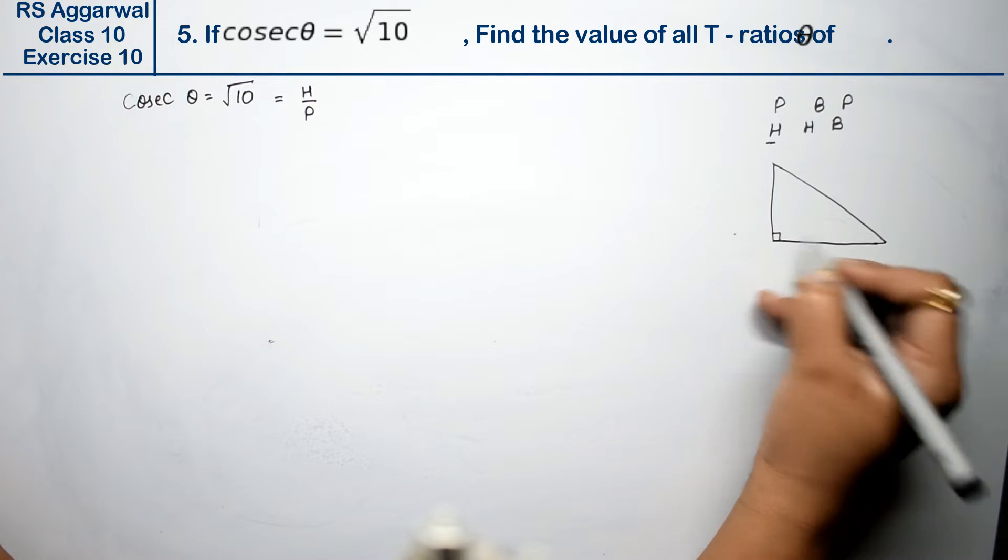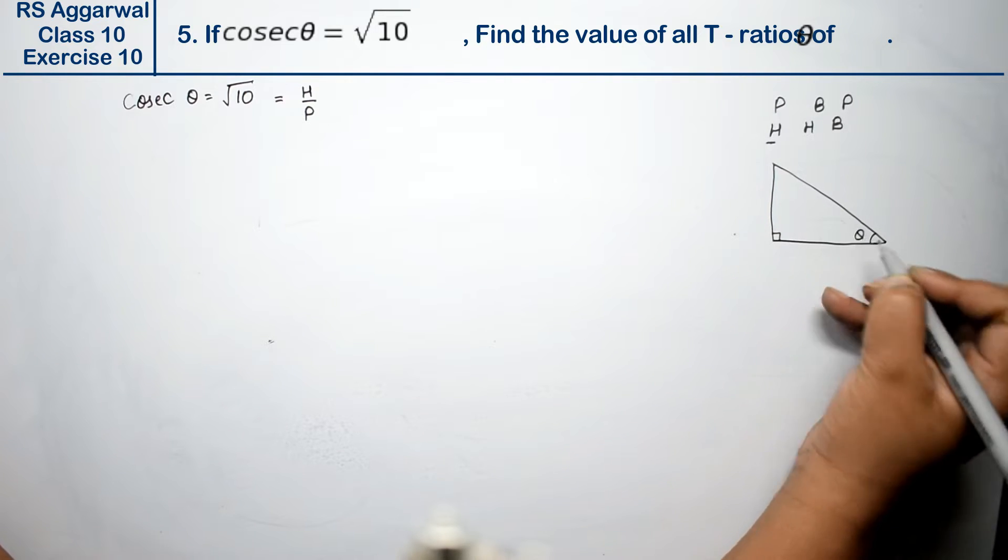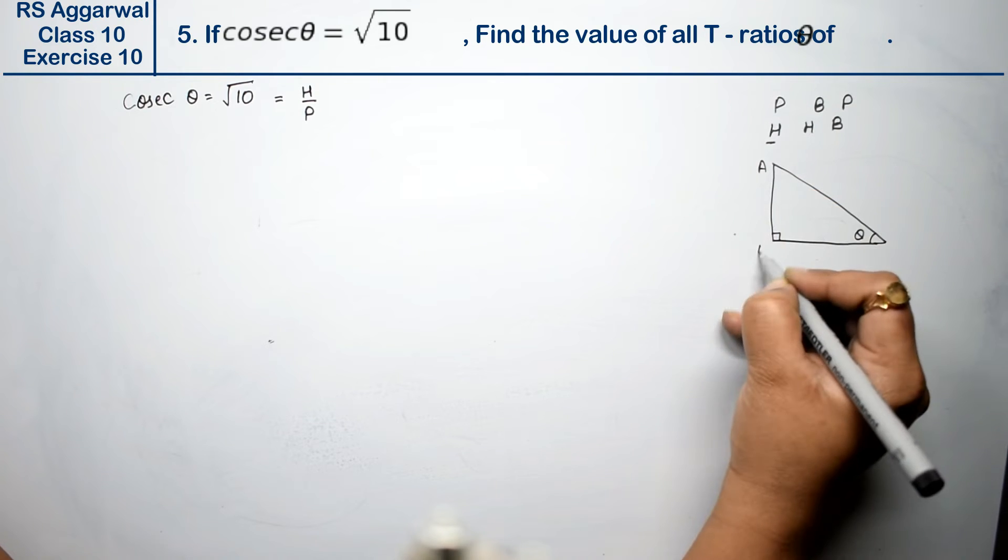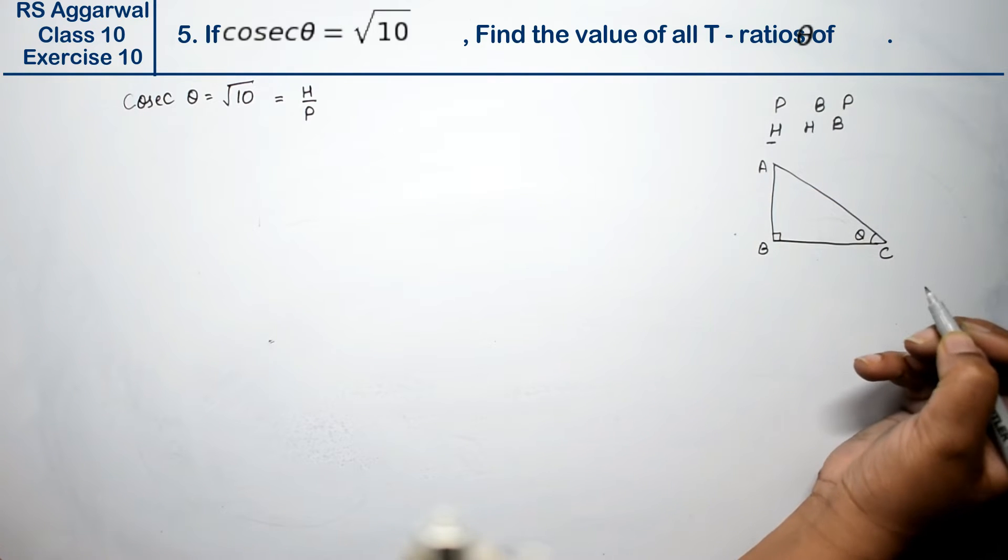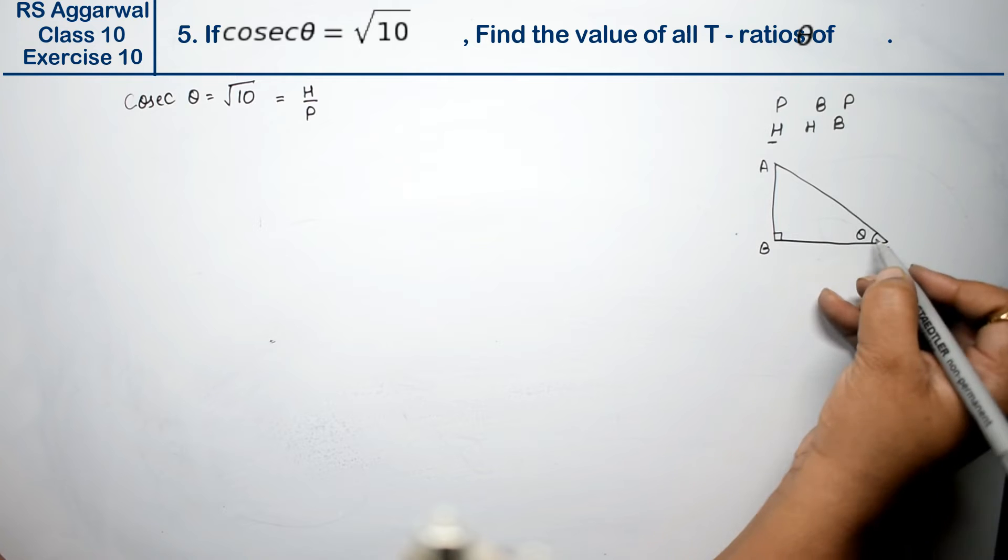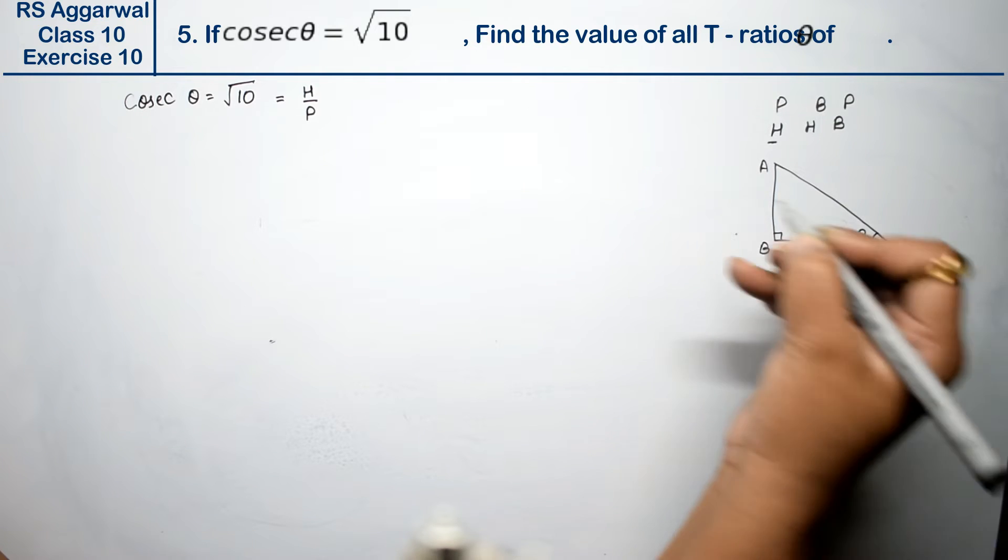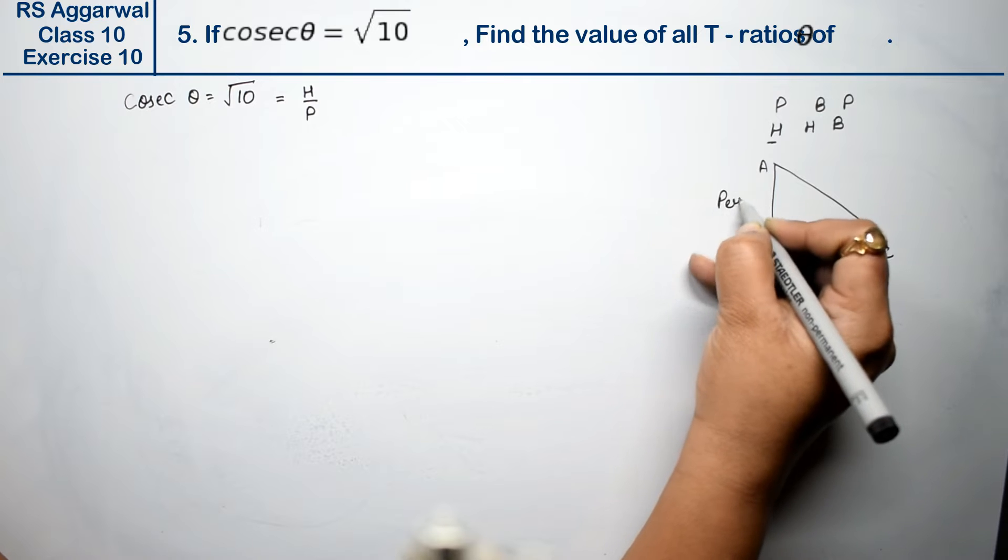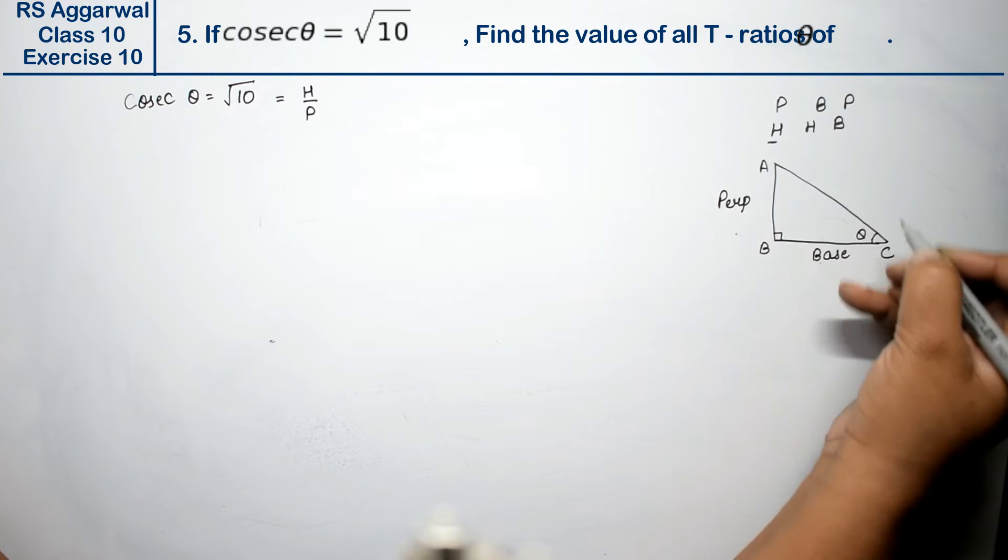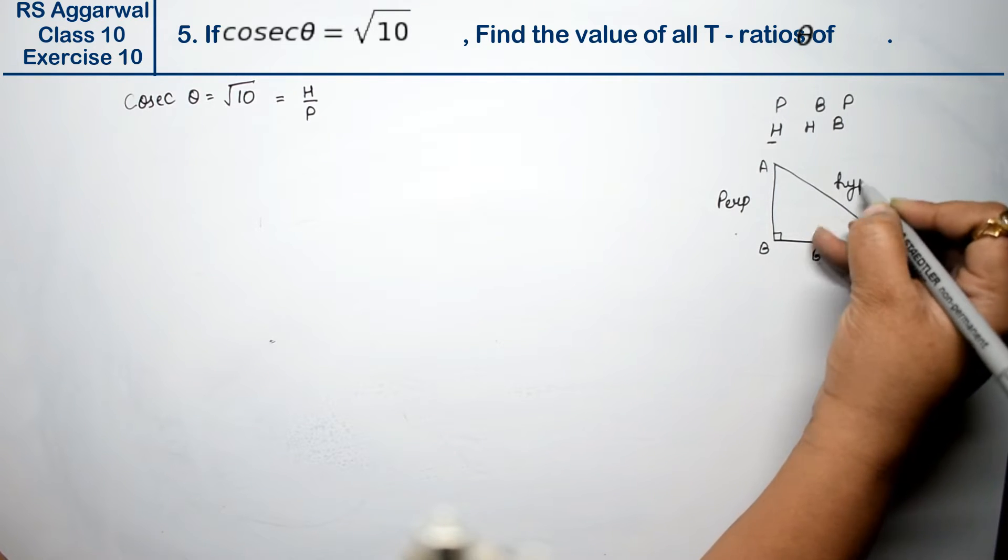This is a 90 degree angle and this is theta. We have the triangle ABC. Now what happened? Where is theta? It was base. The opposite side is perpendicular. And the longest side is hypotenuse.